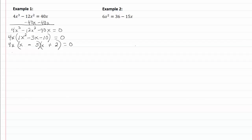Now that I have it factored, I set each one of those equal to zero. So I have 4x = 0, x - 5 = 0, and x + 2 = 0.